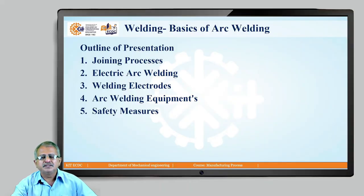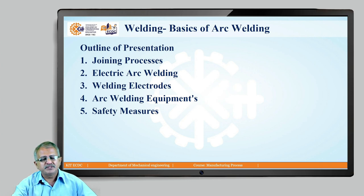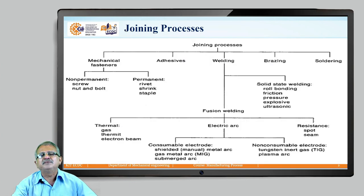Hello friends, today's session is on basics of arc welding. In this we are going to understand the different joining processes which are available. Under fusion welding, there are various process options. The significance of arc welding, the principle of electric arc welding, and the most important component — welding electrodes — will be covered. Also, types of welding electrodes, basic arc welding equipment requirements, and safety precautions to be taken during welding process execution.